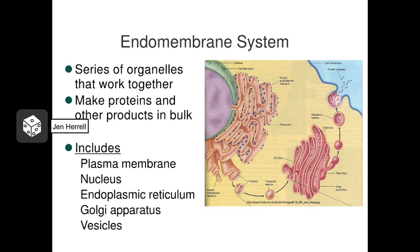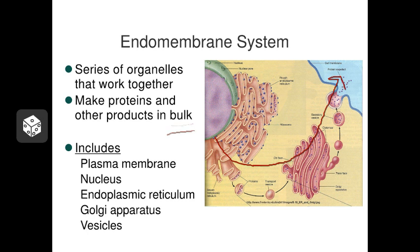The endomembrane system is a group of membranous organelles that work together to produce products in bulk. This system is like an assembly line in a factory, and it's going to produce a lot of a particular type of product. Oftentimes that product is an extracellular product — meaning it's going to be released to the outside of the cell. For instance, the hormone insulin might be produced inside a pancreatic cell but released into the blood outside the cell. Other times the product is going to stay inside the cell and be used by the cell itself.